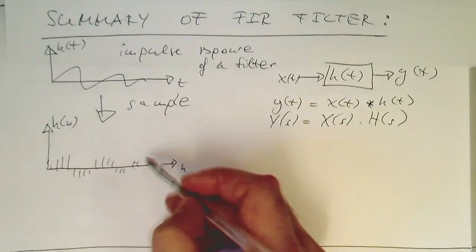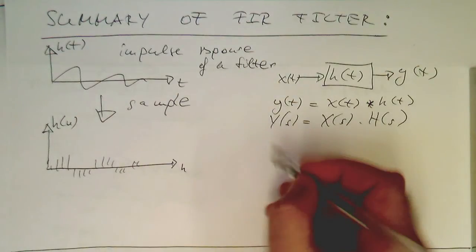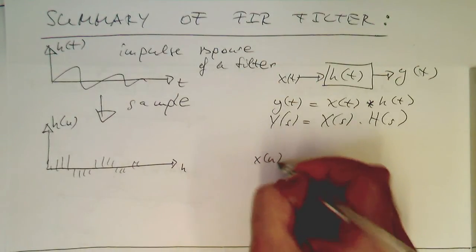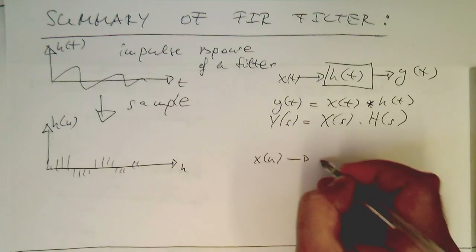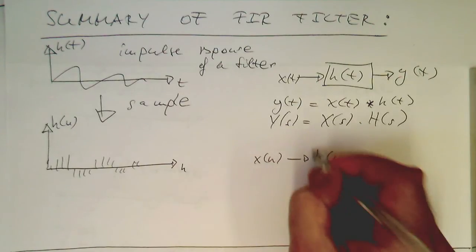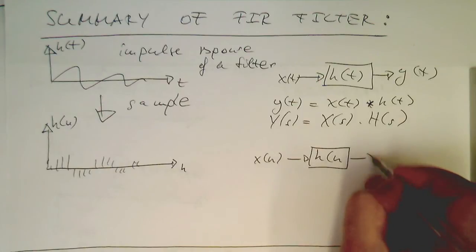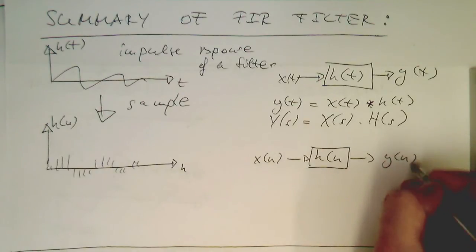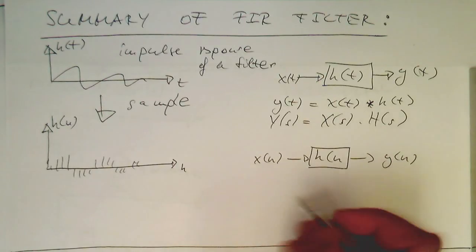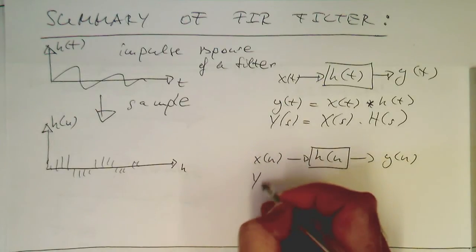We've got our sampled system here. Now we have X, and this goes into H, and this is generating Y. Now we know that in the sampled domain,